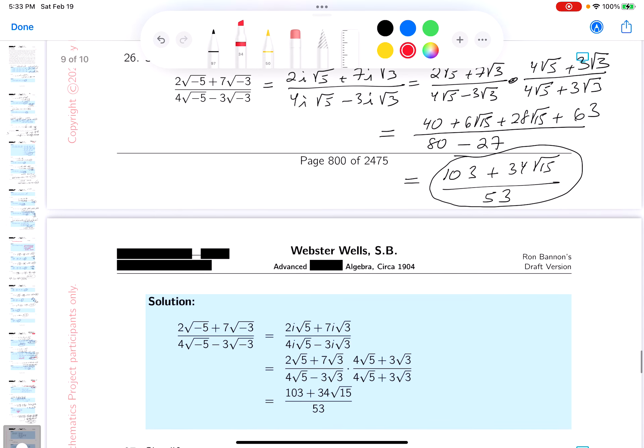Let's look at the key. Do they have it? 103 plus 34 root 15 over 53. We're done.